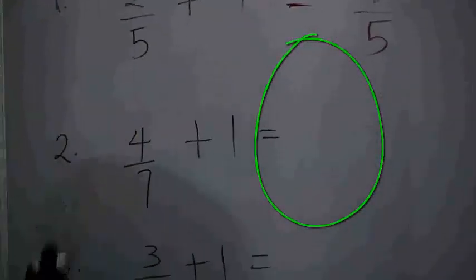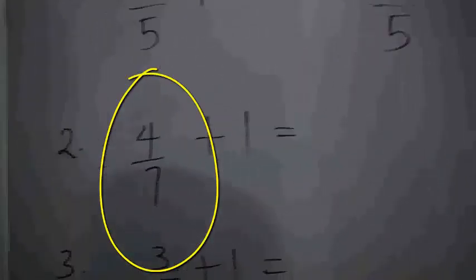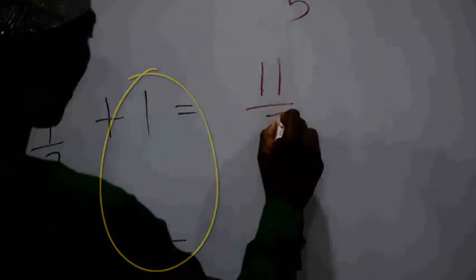Let's see the second example: 4 over 7 plus 1. Sum of 4 and 7 is 11, so we get 11 over 7.